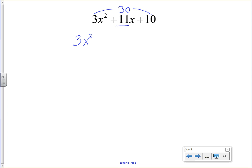I'm going to split the 11x, which is the middle term, into two terms using the coefficients that I picked, 5x and 6x. It doesn't matter what order you put them in. I could have written that as plus 6x plus 5x. I'm still going to get the same answer at the end. And then I have a plus 10 at the end.